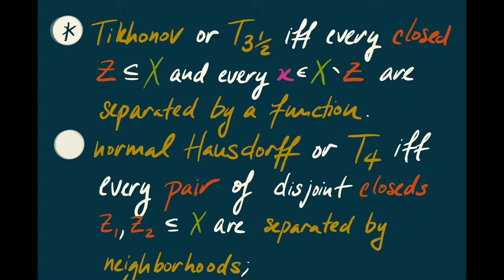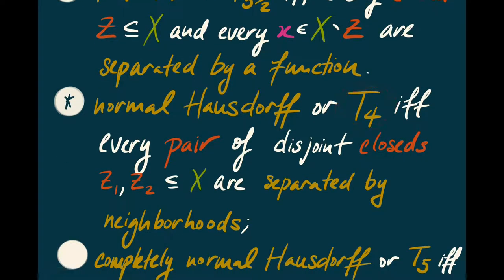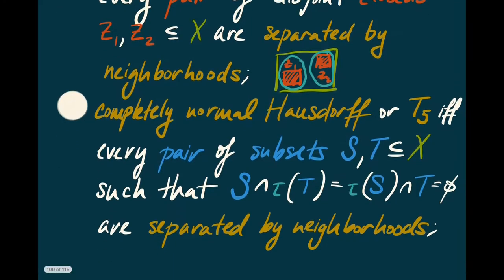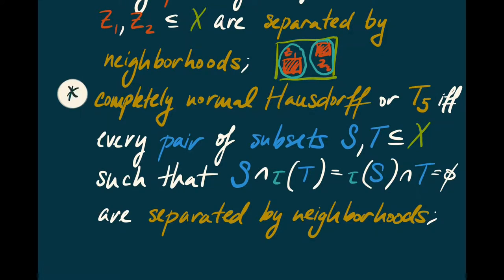Stronger still: X is normal Hausdorff, or T4, if and only if every pair of disjoint closed subsets Z1 and Z2 are separated by neighborhoods — we can find disjoint open neighborhoods around each. Next, X is completely normal Hausdorff, or T5, if and only if every pair of subsets S and T, where S doesn't intersect the closure of T and T doesn't intersect the closure of S, are separated by neighborhoods.